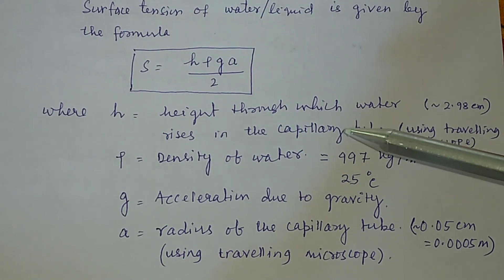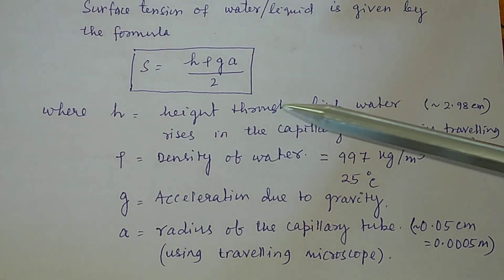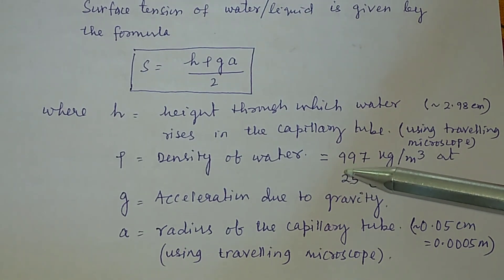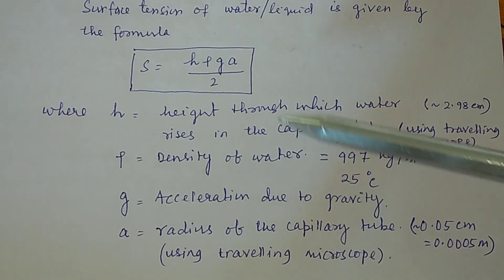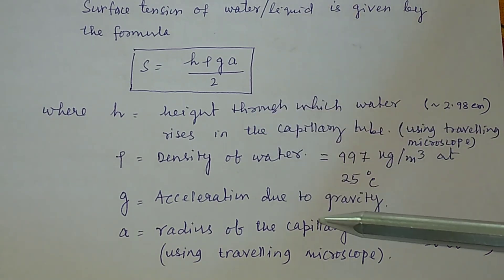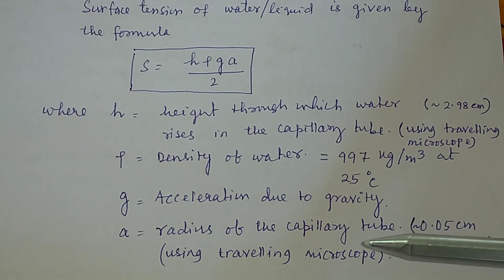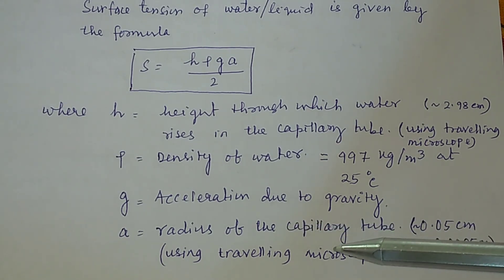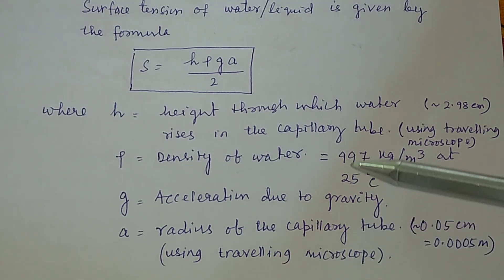This height through which water rises in the capillary tube can be measured by using a traveling microscope. Rho is the density of water, which is equal to 997 kg per meter cube at 25 degree centigrade. G is the acceleration due to gravity, and A is the radius of the capillary tube, which you measure by means of a traveling microscope.